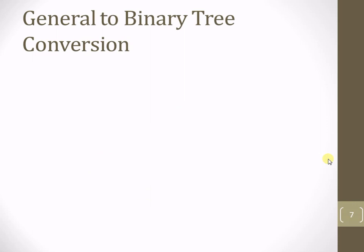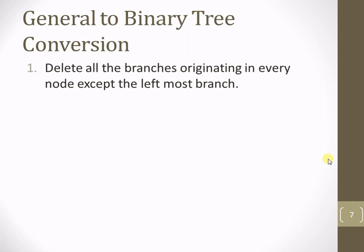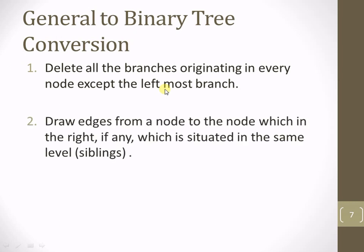Now let's move to the conversion of a general tree to a binary tree. There are only 2 steps. In the general tree, step 1 is to delete all branches originating from every node except the leftmost branch. We keep only the leftmost child connected to its parent node and delete all other branches. Step 2 is to draw edges from the leftmost node to the node on its right, meaning all siblings will get connected with each other starting from the leftmost child.